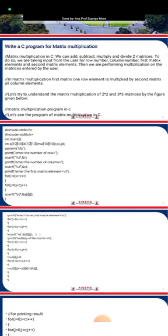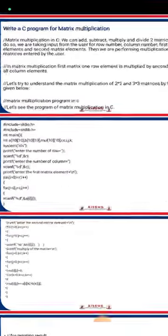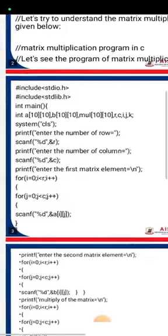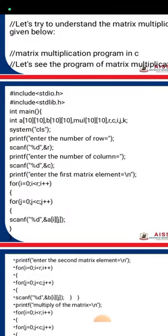Let's understand matrix multiplication of 2x2 and 3x3 matrices using the figure given below. This is the example program for matrix multiplication in C. First, we include the header files stdio.h and stdlib.h — the standard input/output header file and the standard library header file. After that, we have the integer main function, where execution starts. Then we declare integer array a[10][10] for the first matrix.